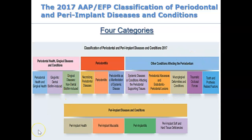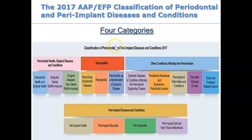Right now, what I just want you to know is that there are four categories. So if you were to come see me right now, I would look inside your mouth and say you're either in the healthy category, or you have gingivitis, or you might be in the category where you have periodontitis.